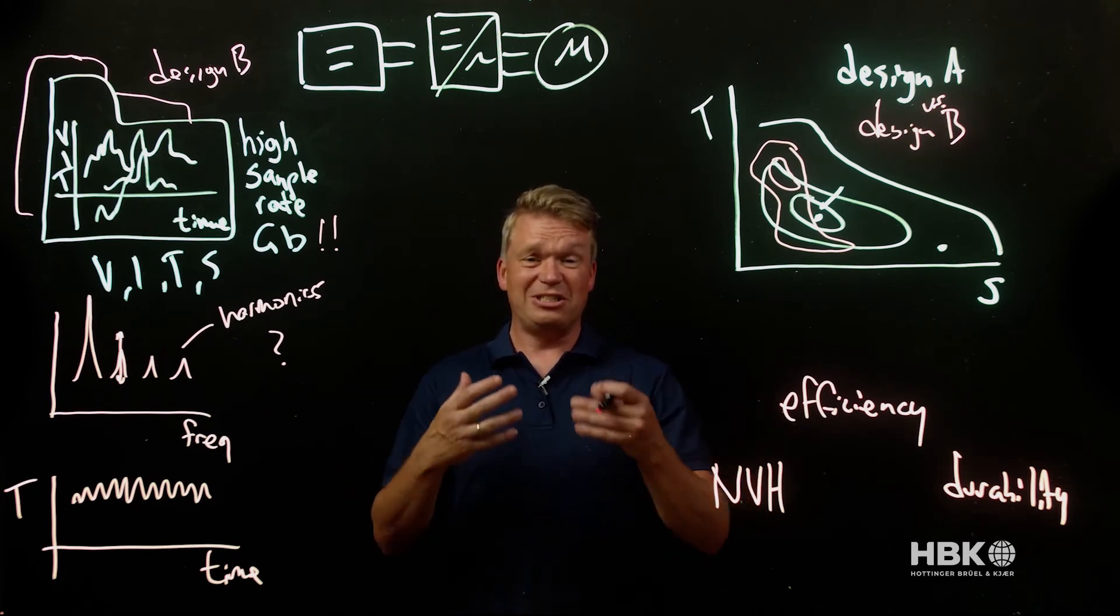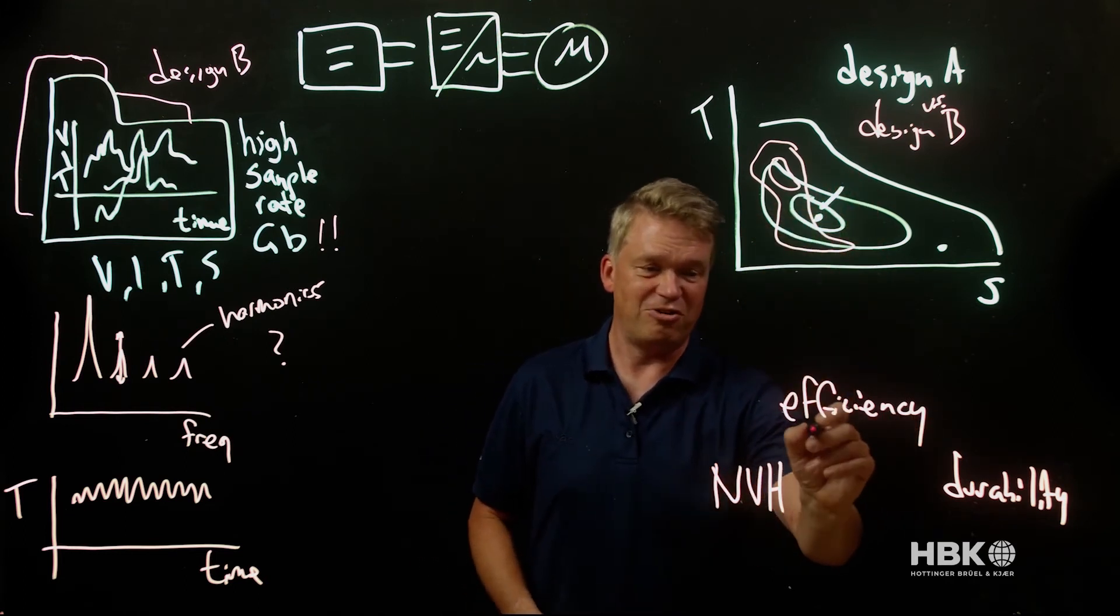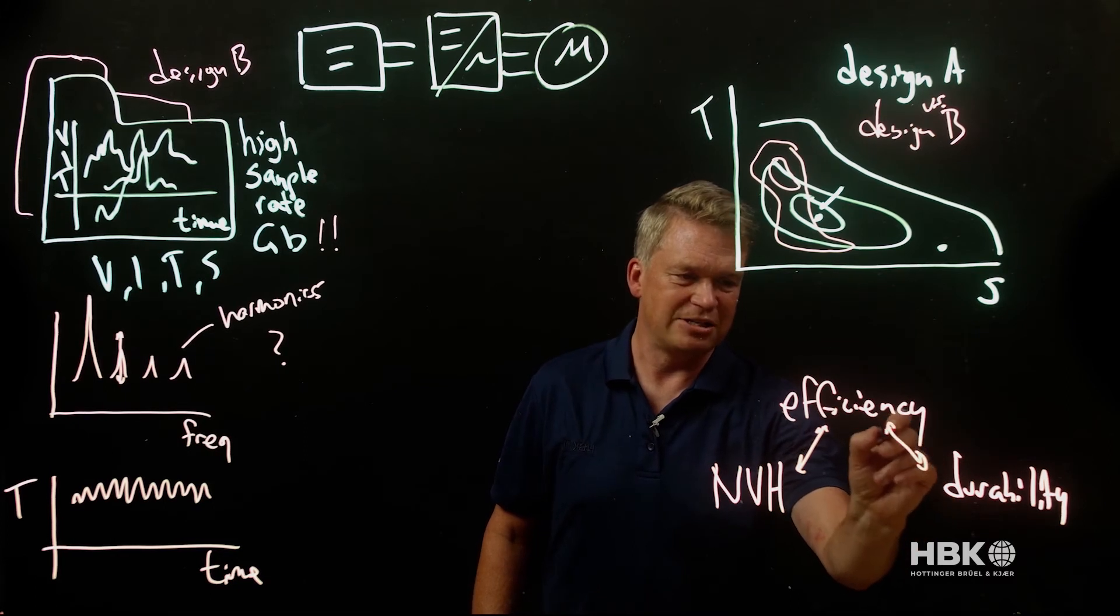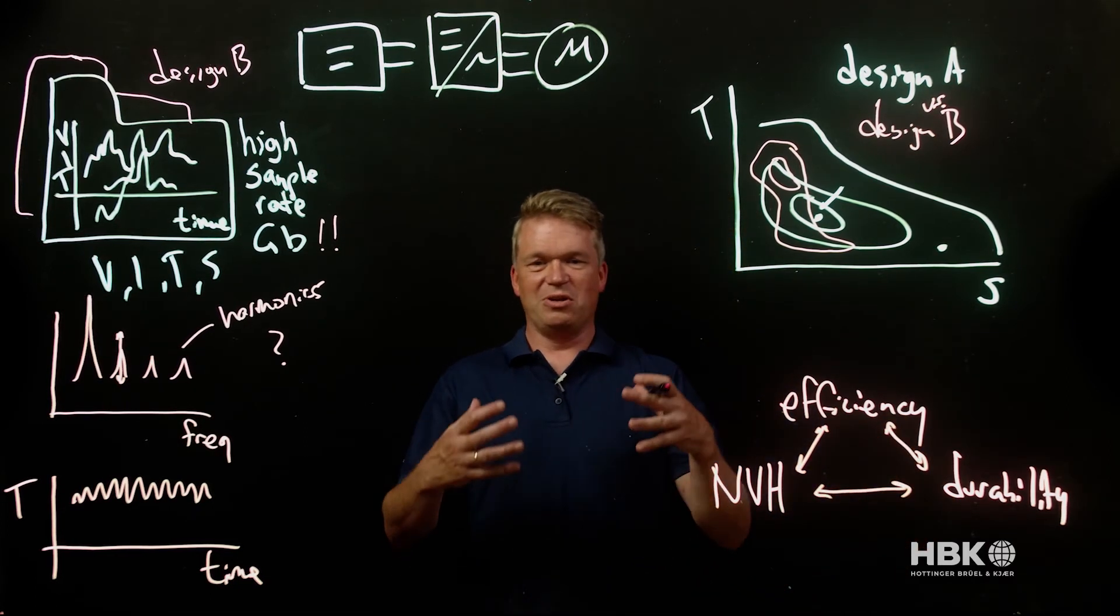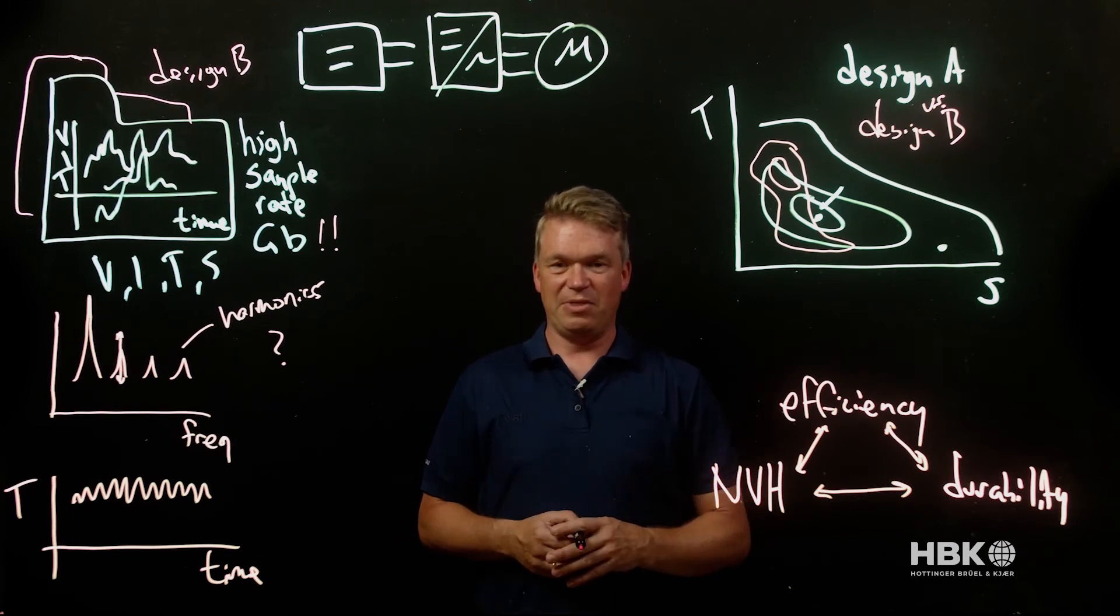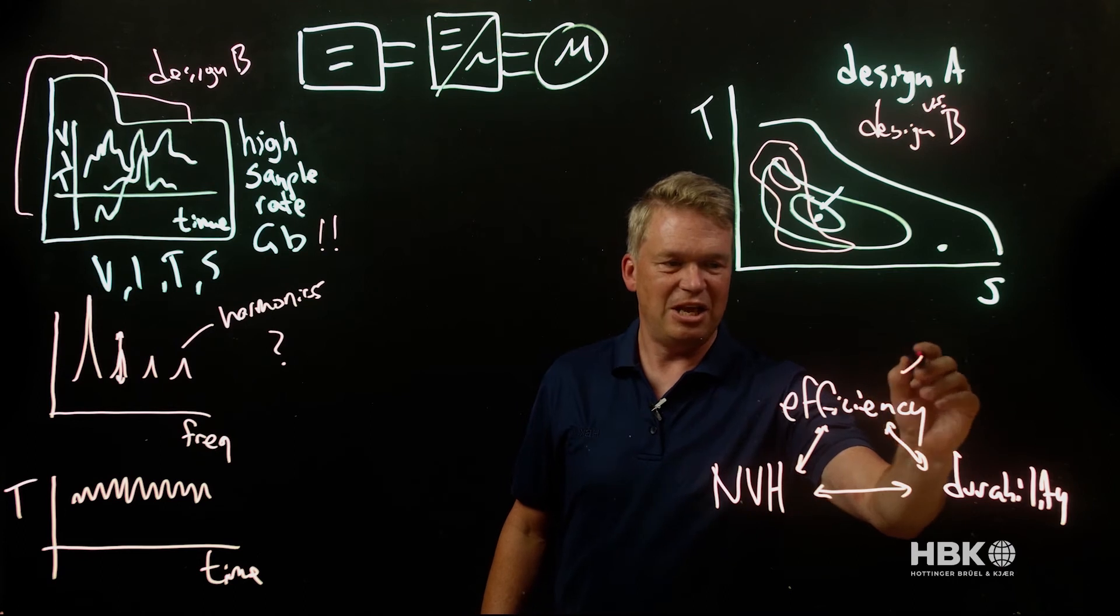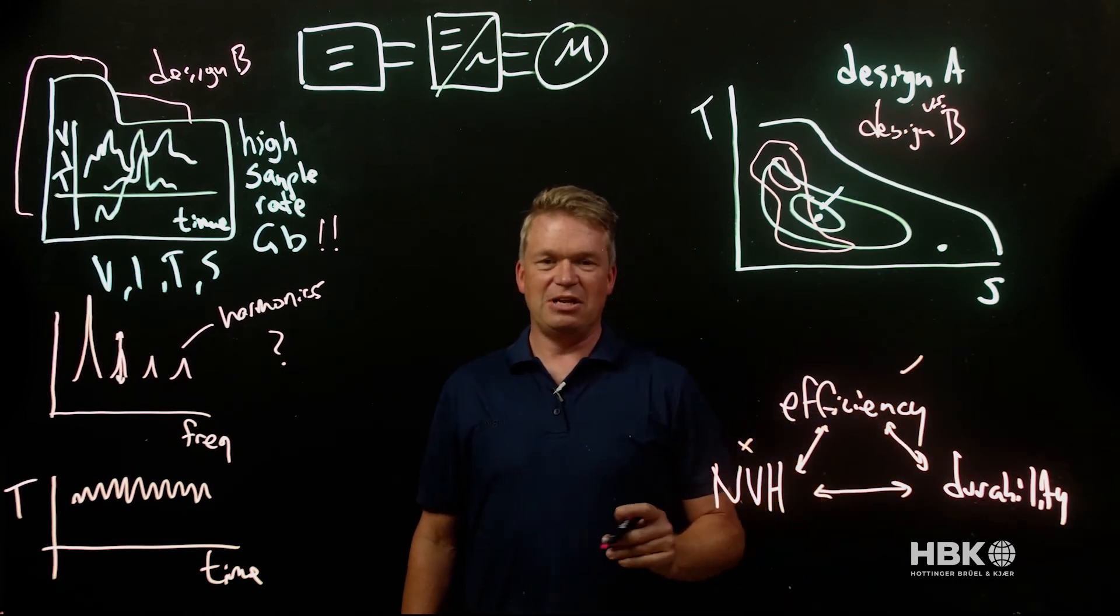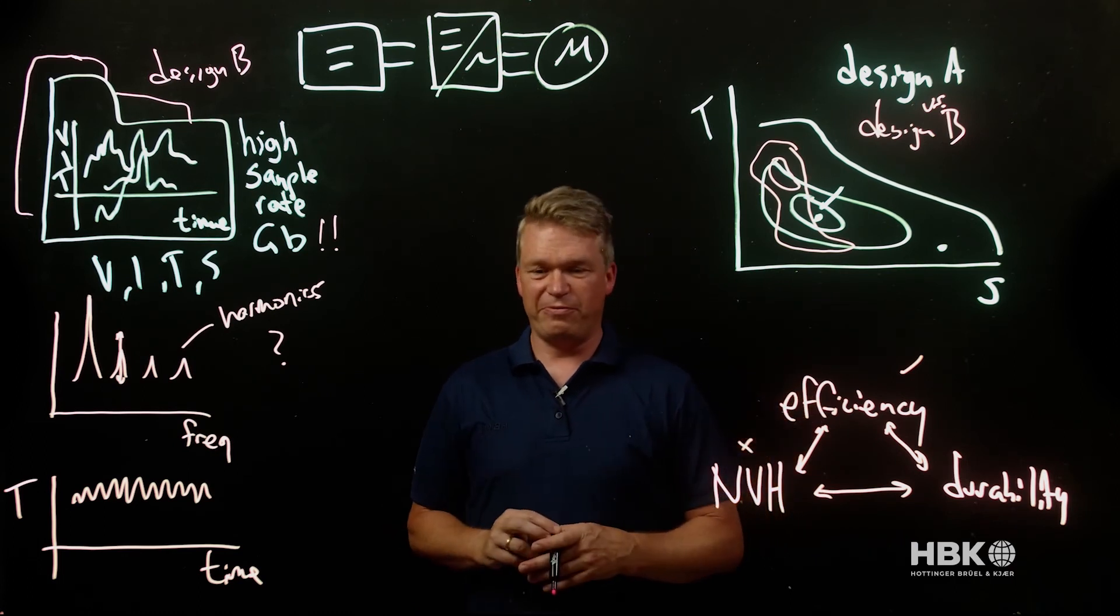But the ENCODE tool set allows us to dig into all these things to understand efficiency, to understand NVH, to understand durability. And not just those things independently, but we have to recognize that the motor control and hardware that we choose in our design results in an interplay of these effects. We want to be able to capture them all and understand how maybe addressing efficiency may have an impact on NVH. How can we optimize the solution such that we come up with the best possible performance?